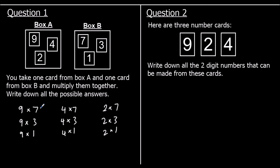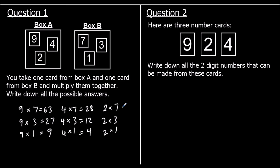Now multiplying them: nine sevens are sixty three, nine threes are twenty seven, nine ones are nine. Four sevens are twenty eight, four threes are twelve, and four ones are four. Two sevens are fourteen, two threes are six, and two ones are two. So those are all the different numbers we could get: sixty three, twenty seven, nine, twenty eight, twelve, four, six, and two.